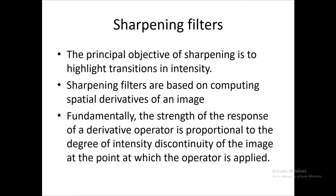As we discussed in our previous class, smoothing in the spatial domain is achieved by pixel averaging in a certain neighborhood, which is analogous to integration. So it is logical to say that sharpening can be accomplished by spatial differentiation. We will define and implement various operators for sharpening by digital differentiation. The strength of the response of the derivative operator is proportional to the degree of intensity discontinuity of the image at the point where the operator is applied. Thus, differentiation enhances the edges and other discontinuities such as noise.